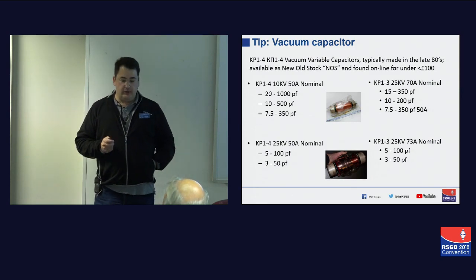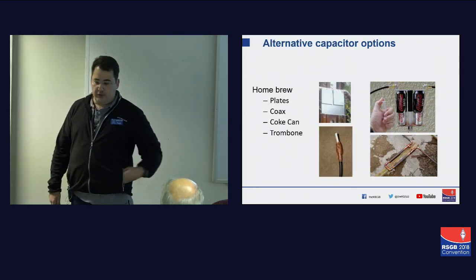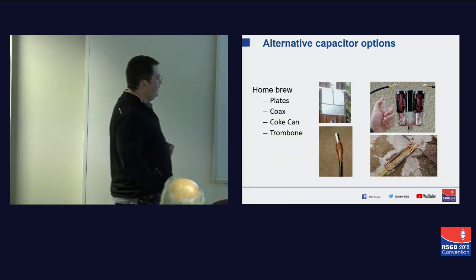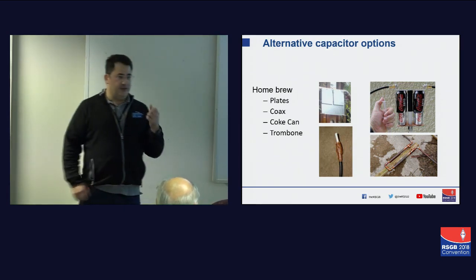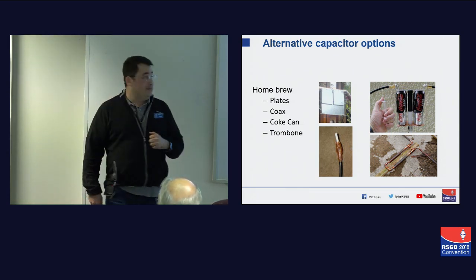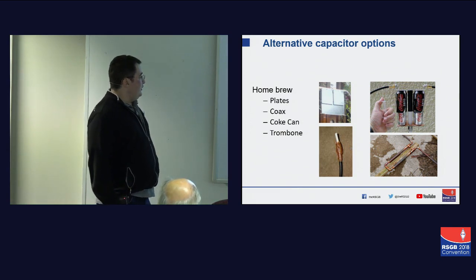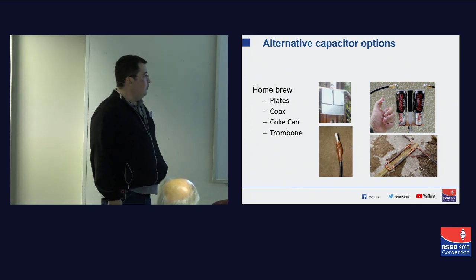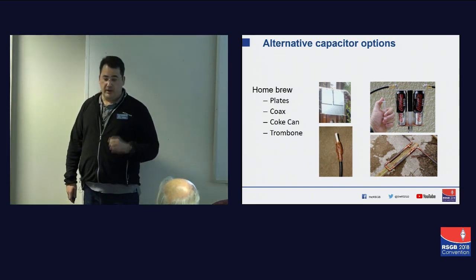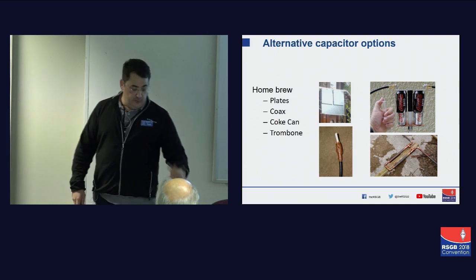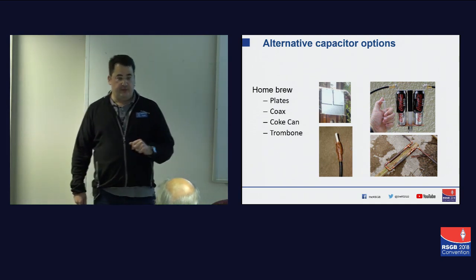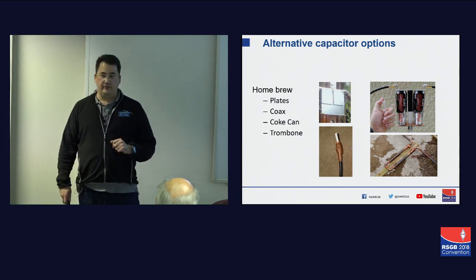If you want to build your own capacitors there are a number of options, but this becomes a challenge if you want to remotely tune unless you're using a syringe and some sort of hydraulic mechanism. You can experiment by using coax stubs, or creating plates, or a trombone out of copper. However, I recommend that if you want to run QRO, get yourself a vacuum variable capacitor to avoid anything melting.